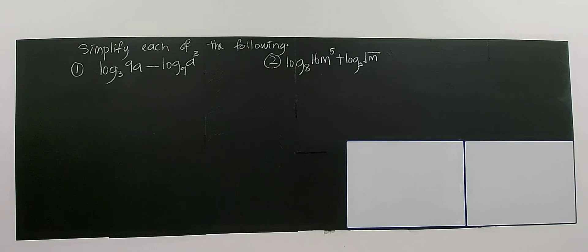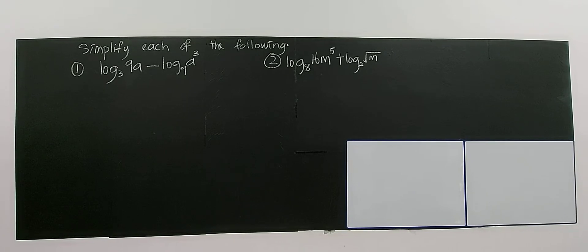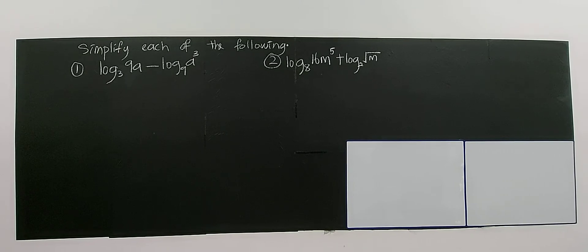Alright, let's further look at this example. It's also about simplification involving a number and a variable, with an unknown and number. So for this type of question, you have to decide a suitable formula.